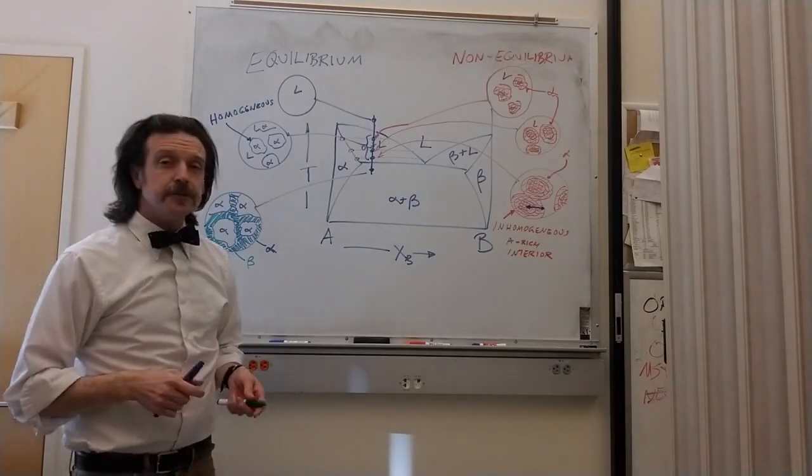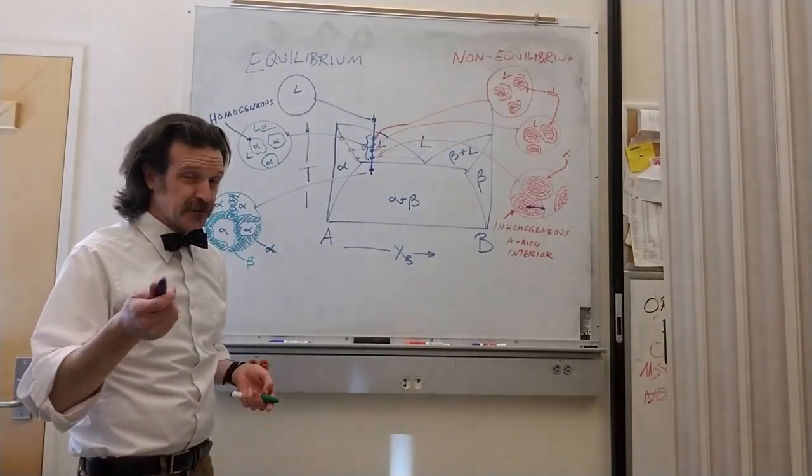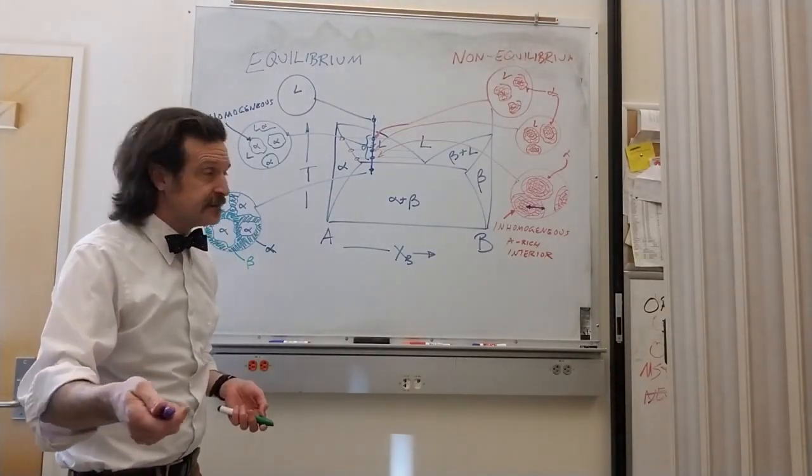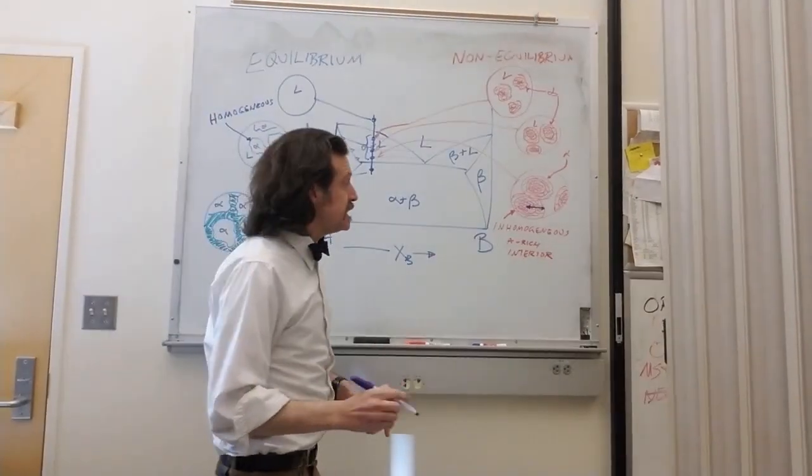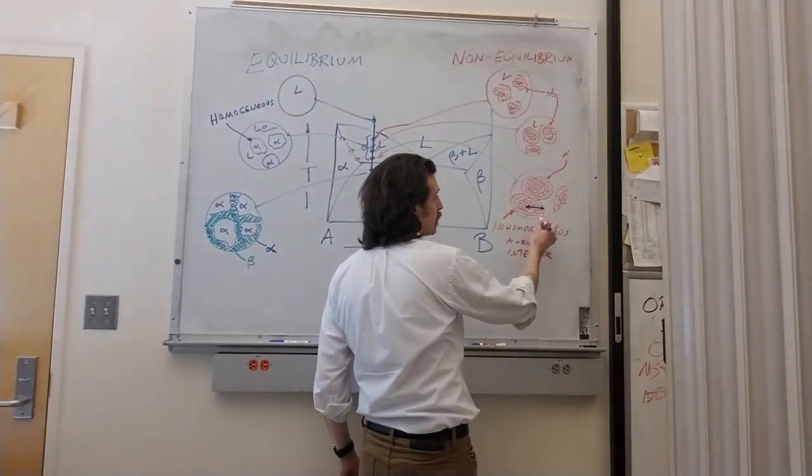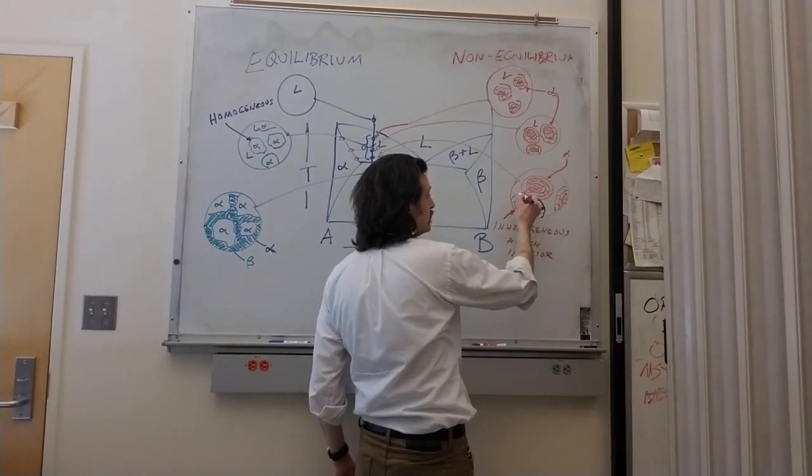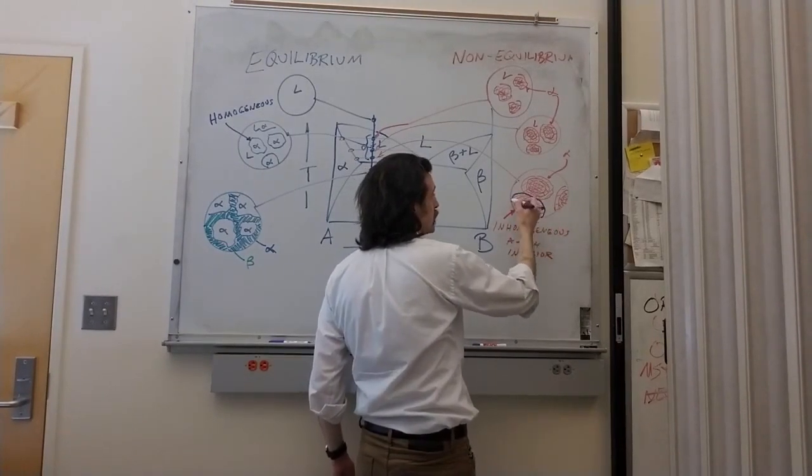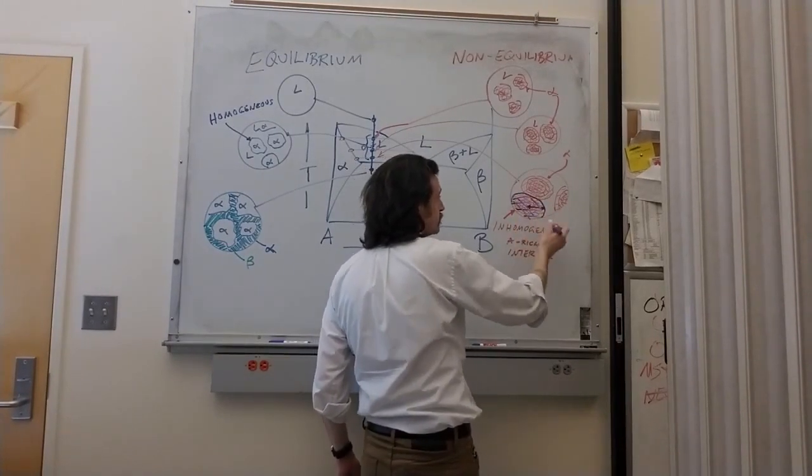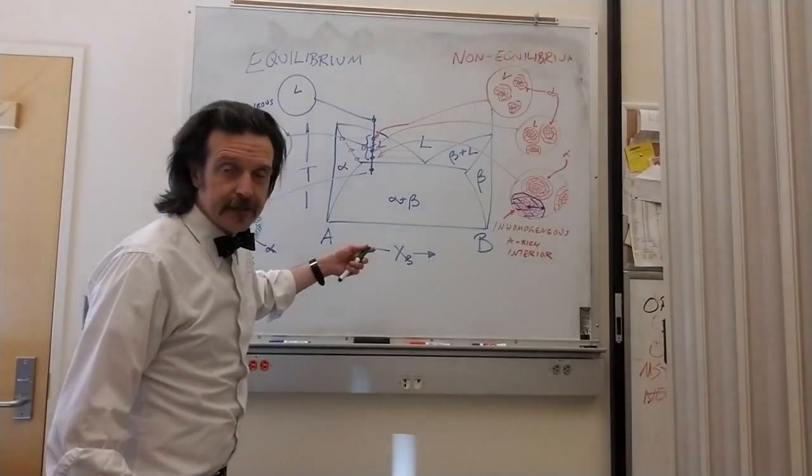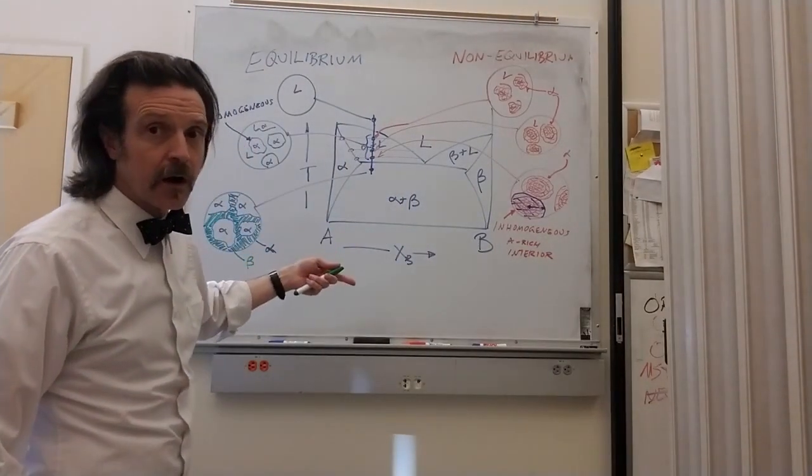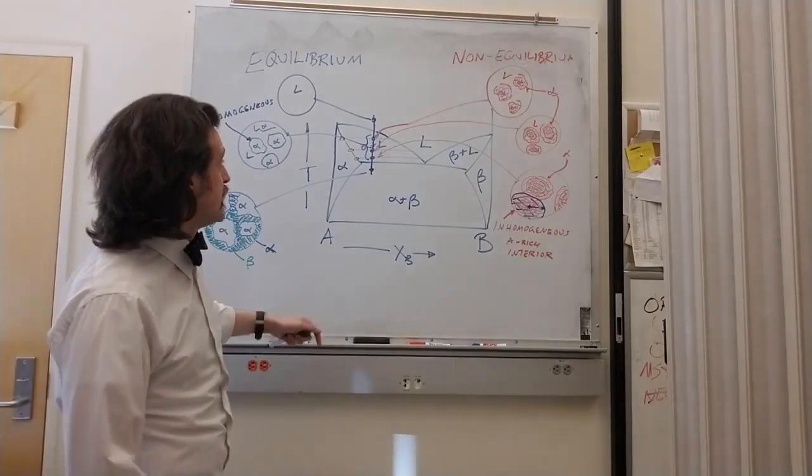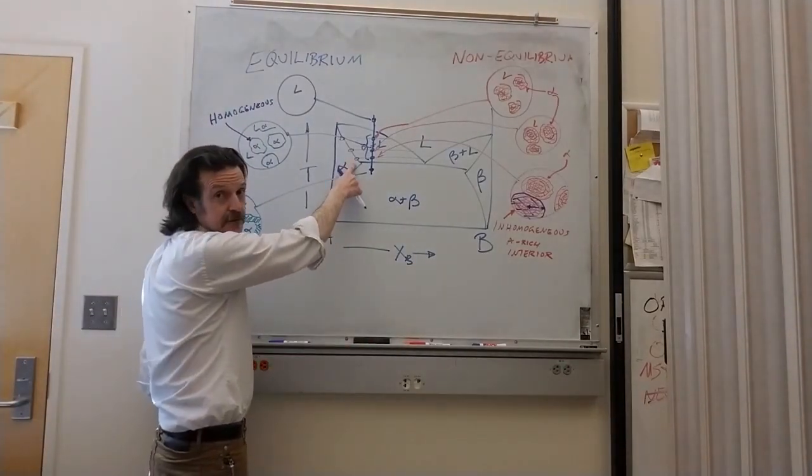If you think about this, what it's also telling us is that if I were to integrate overall the amount of A within this entire precipitant, it's actually going to have more A than is predicted in the final.